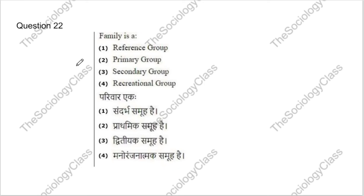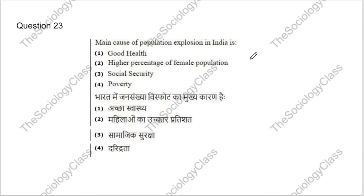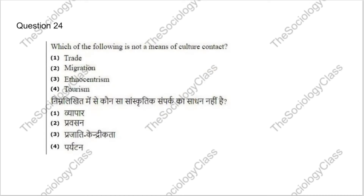Question 22: Family is what? Options: reference group, primary group, secondary group, or recreational group. The correct answer is B — primary group. Question 23 asks about the main cause of population explosion in India. The correct answer involves good health as a contributing factor.